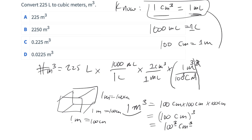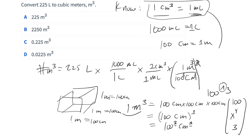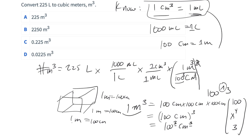Make sure you can put this in a calculator correctly. Do 225 times 1,000 divided by 100 to the power of 3 — using the caret or x^y button — or just do 225 times 1,000, divide by 100, divide by 100, divide by 100. That'll get you the right result of answer C: 0.225 cubic meters.